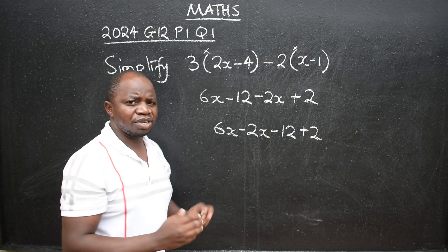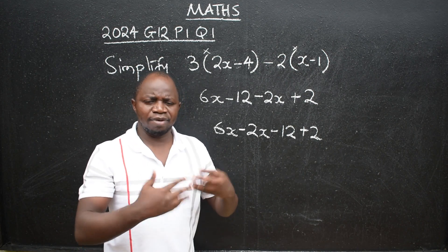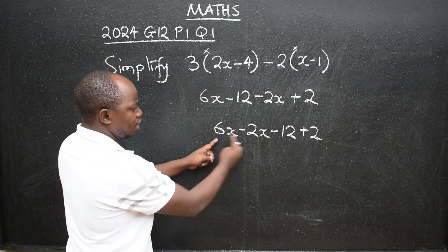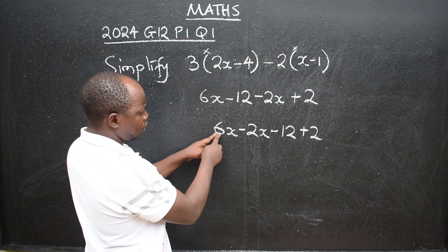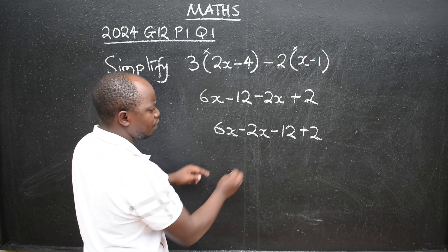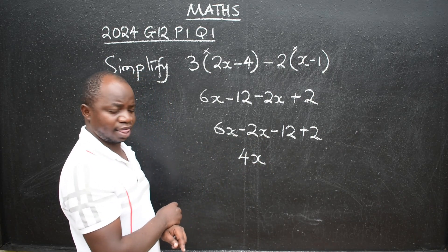Now at this stage, remember, like terms can be added, can be subtracted. So these two can be subtracted. So 6x minus 2x will give you a 4x, like that.